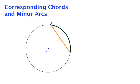If we are given a circle, or two congruent circles, with two congruent chords, we can prove that their corresponding minor arcs are also congruent.